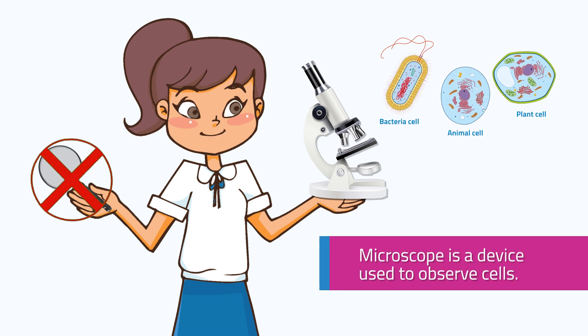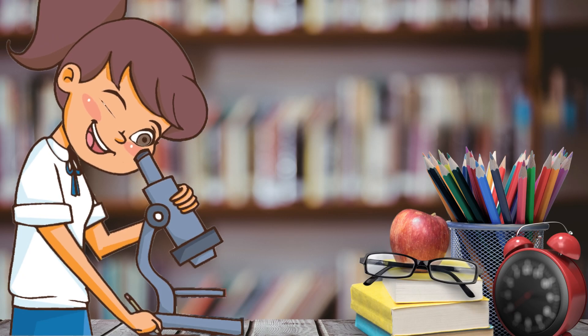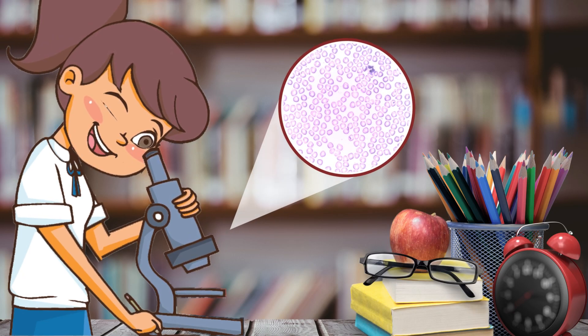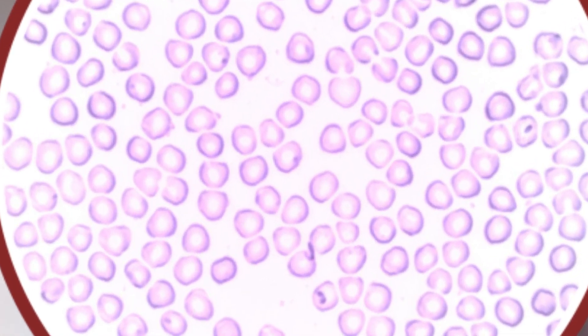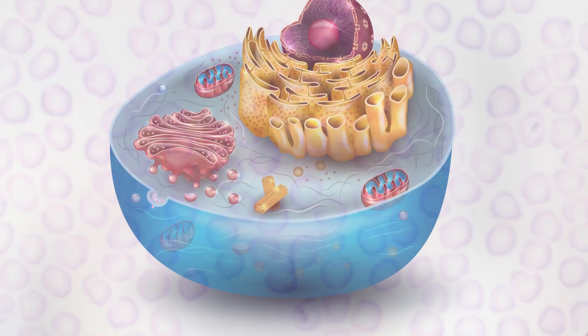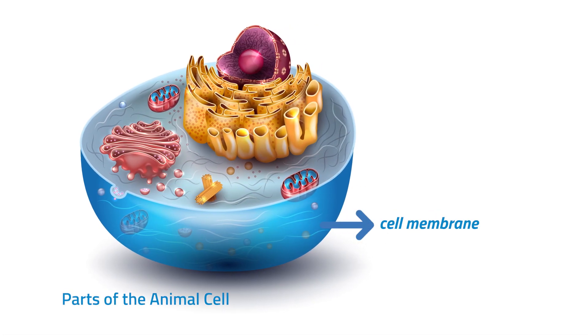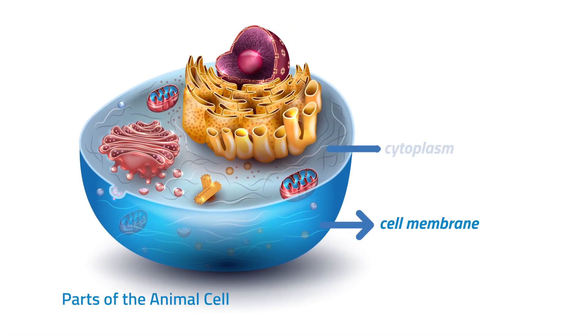Microscope is a device used to observe cells. Take a closer look at the cell structure. Most of the cells have three main parts: the cell membrane, cytoplasm, and the nucleus.